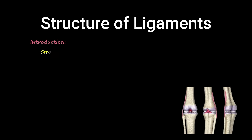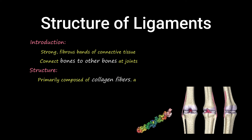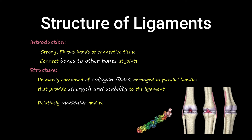Ligaments are strong, fibrous bands of connective tissue that connect bones to other bones or joints. They are composed primarily of collagen fibers arranged in parallel bundles that provide strength and stability to the ligament. Ligaments are relatively avascular and receive nutrients and oxygen from surrounding tissues.